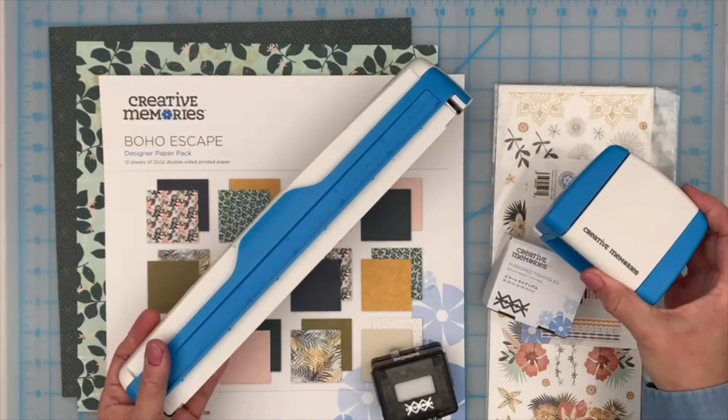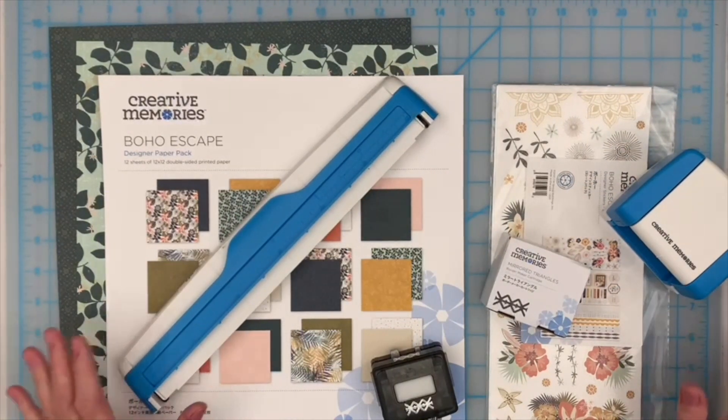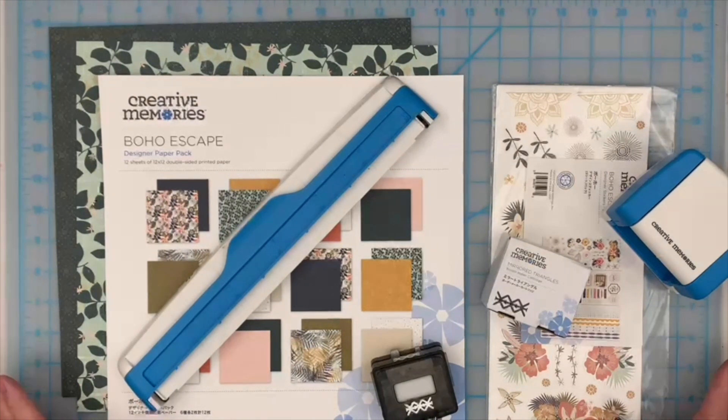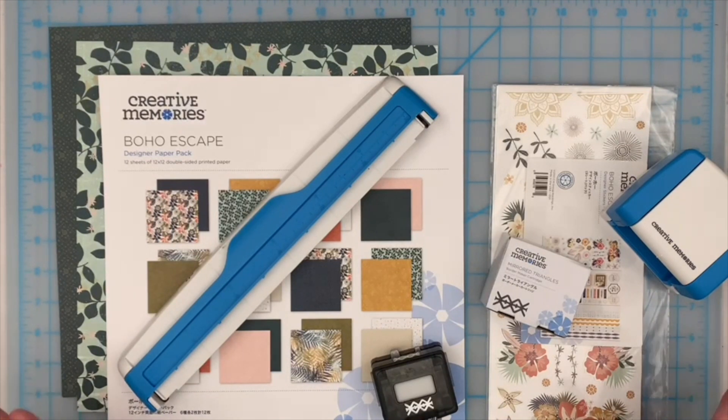This first layout is so easy that you don't even need your 12-inch trimmer. It's going to have space for five photos and we're going to make it together in about five minutes. So let's get started.